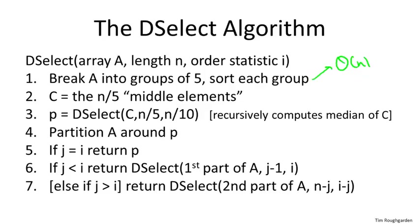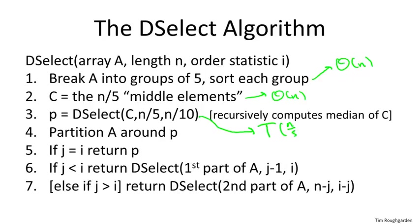When we get to line three, we have a recursive call on an array of size n/5 — that's T(n/5). Step four, partitioning, is theta of n, as we established back in quick sort. Step five is constant time. And finally, lines six and seven each have at most one recursive call, so we just need to figure out the input length — which was T(n/5) for line three, but for line six or seven, we don't know.